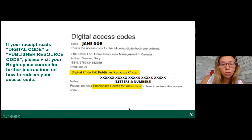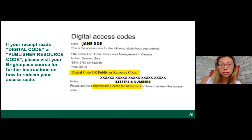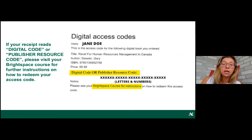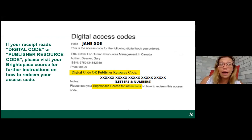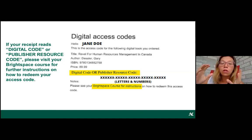The second digital option is a digital code or publisher resource code — longer, containing both letters and numbers. This is not redeemed through Texidium; instead, you redeem it through Brightspace. Your instructor will provide instructions on how to access the title through Brightspace. In summary: Texidium code goes through Texidium; digital or publisher resource code goes through Brightspace.